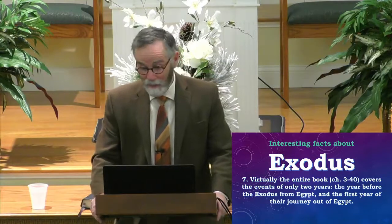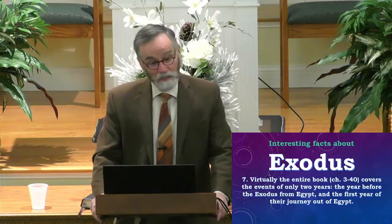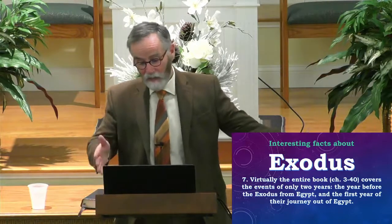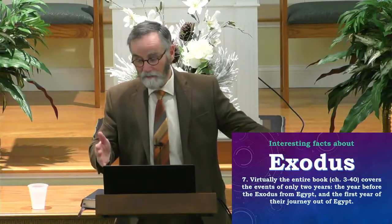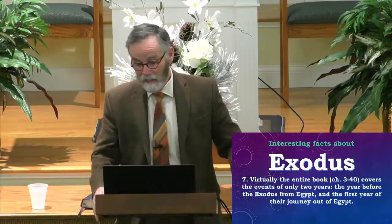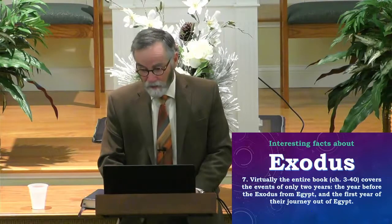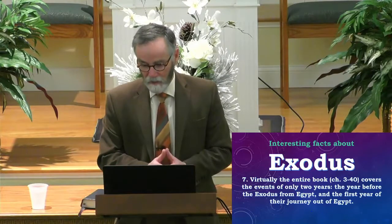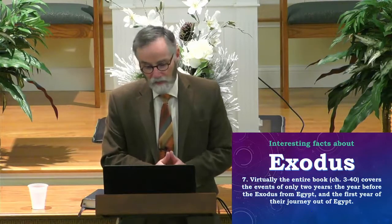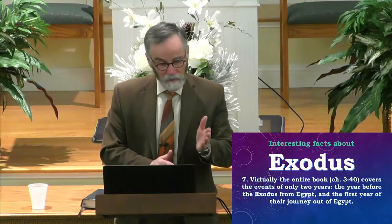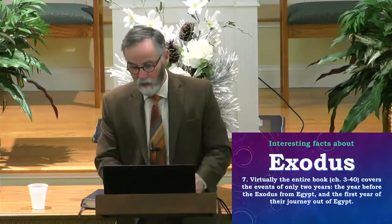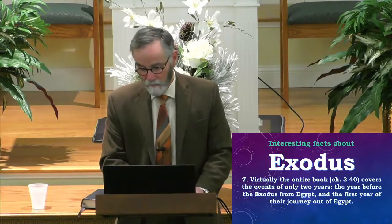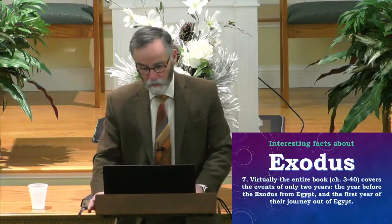That's not a long time frame for all those chapters. Genesis covered the history of the world from eternity past right up until Joseph finds himself in Egypt. Exodus focuses on a very short amount of time — that two years — and it was an important transition period from the dispensation of promise into the dispensation of law, with the revelation of God's plan for a theocratic rule on earth.